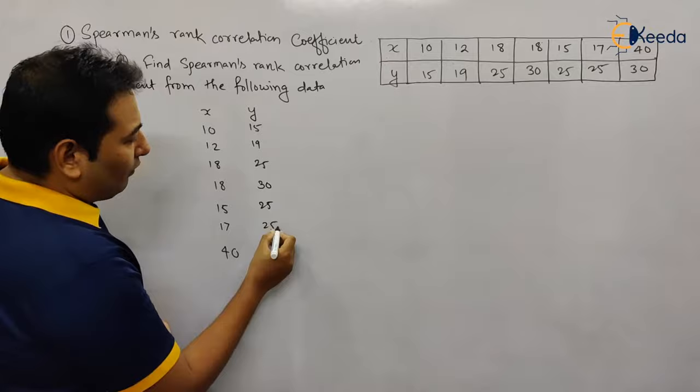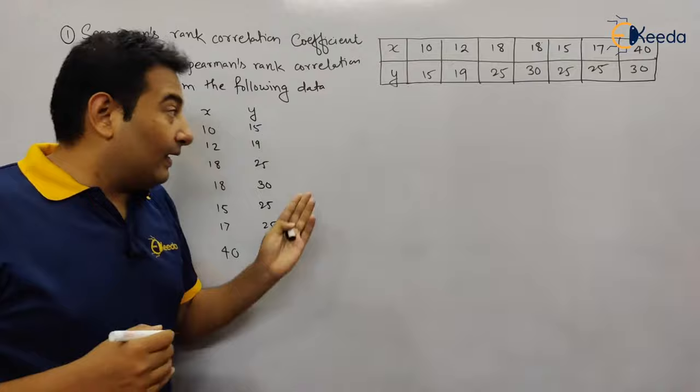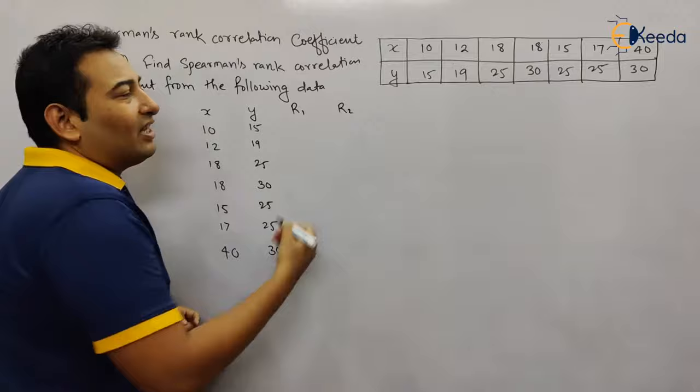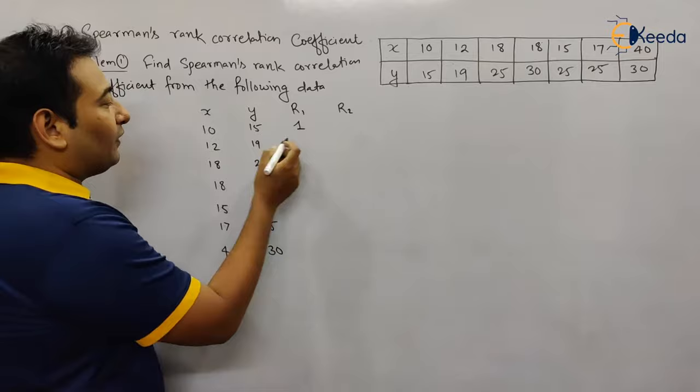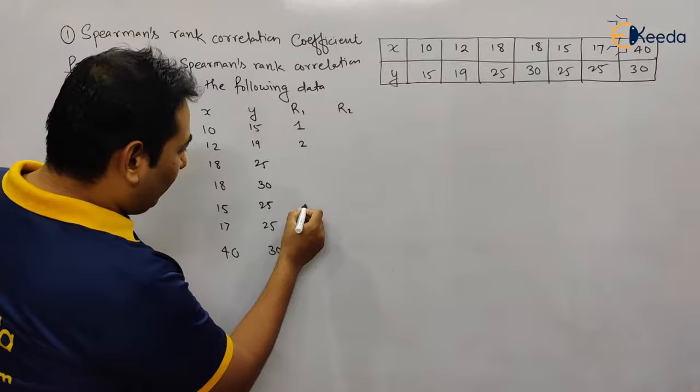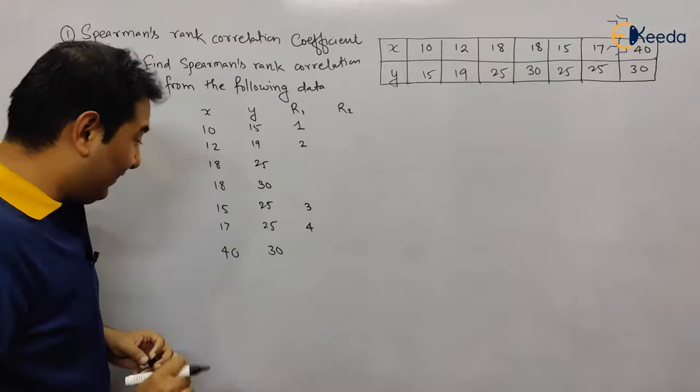Now let us find the ranks, the same way as we did in the last problem. We write down the ranks in ascending order. The smallest value is 10, so rank 1. Then 12 gets rank 2, next 15 gets rank 3, then 17 gets rank 4. Wait — 18 is repeated.